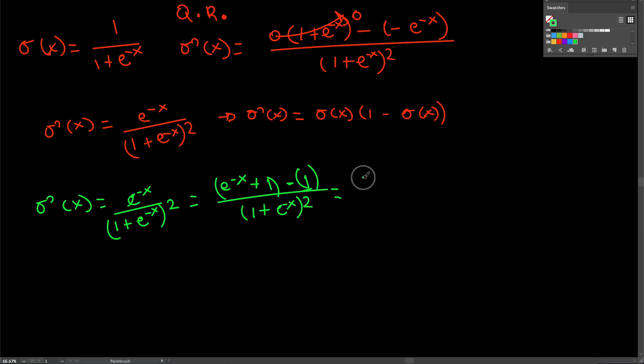So we can just say e to the minus x plus 1 over 1 plus e to the minus x squared, minus I'm just taking this minus from the 1 here and saying 1 over 1 plus e to the minus x squared.